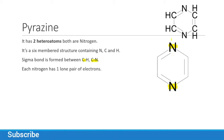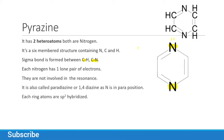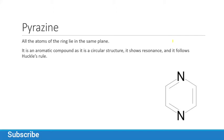Nitrogen also has one lone pair which does not take part in resonance. You can calculate sp2 hybridization of this compound by steric number. The atoms are not involved in resonance. It is also known as paradiazine or 1,4-diazine, as nitrogen is in the para position. Each ring atom is sp2 hybridized, so nitrogen forms three bonds: two single bonds and one double bond, and it also has one lone pair which is not part of resonance.